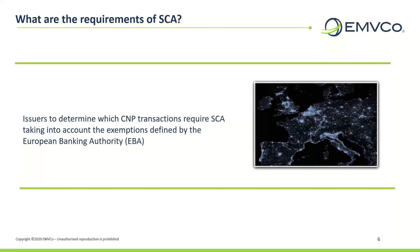While SCA is used voluntarily in Europe today, this has mainly been when a transaction was regarded as high risk. Going forward, issuers will determine which CNP transactions require SCA, taking into account the exemptions defined by the European Banking Authority, EBA. For certain transactions, issuers can use risk-based authentication as an acceptable method if the transaction is within specific thresholds defined by the EBA.